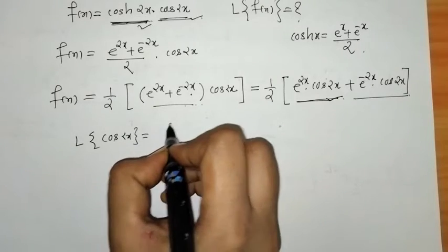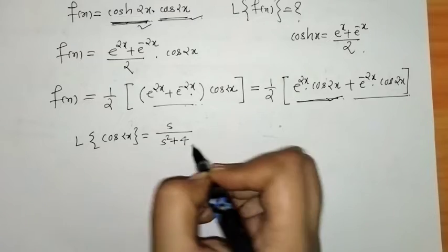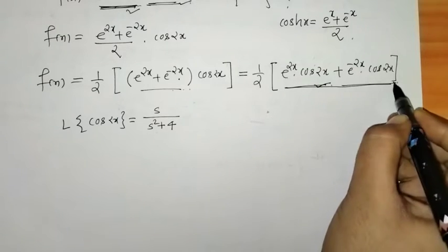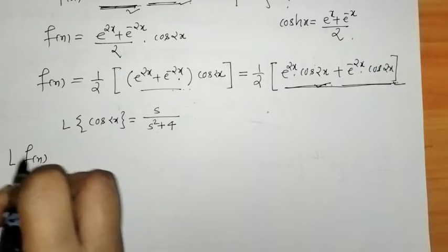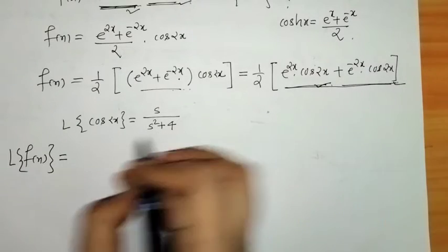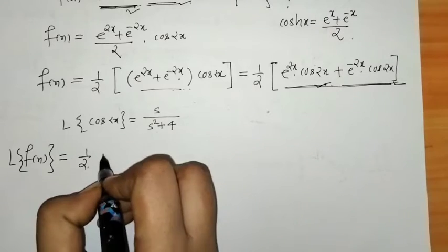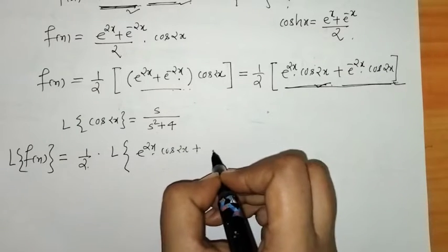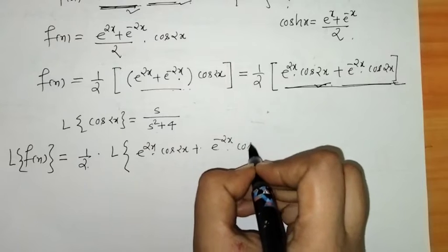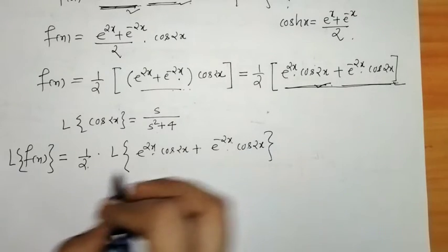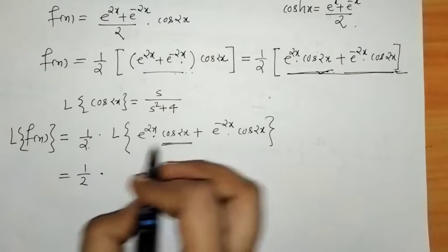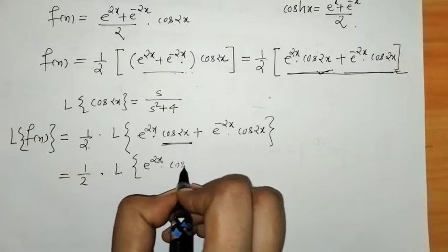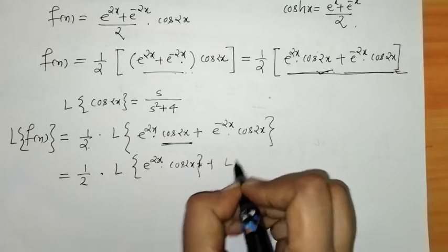So the Laplace transform of f(x) equals (1/2) times the Laplace of e^(2x)·cos(2x) plus the Laplace of e^(-2x)·cos(2x). We apply the linearity property to separate these two Laplace transforms.